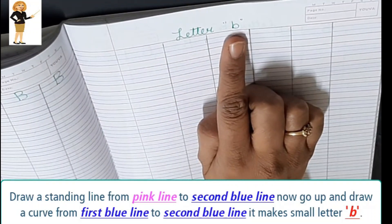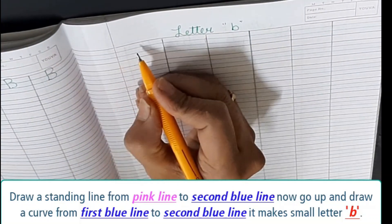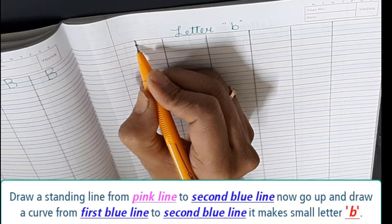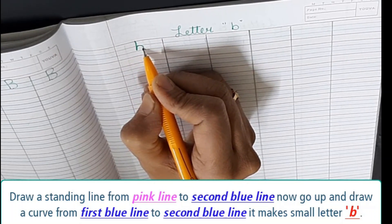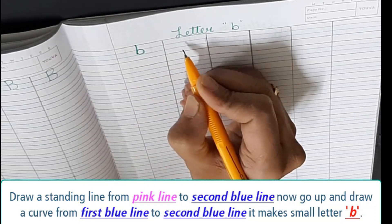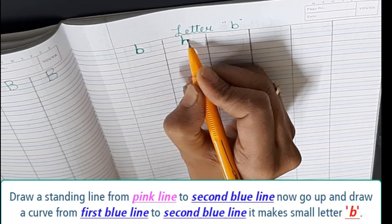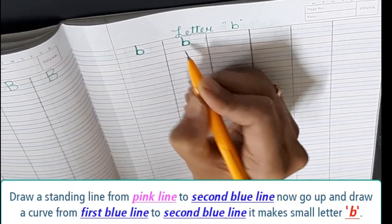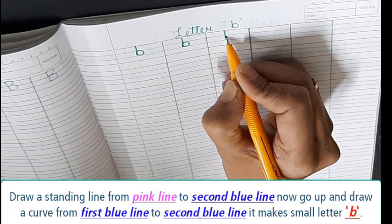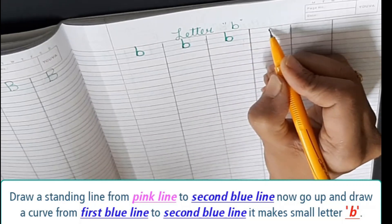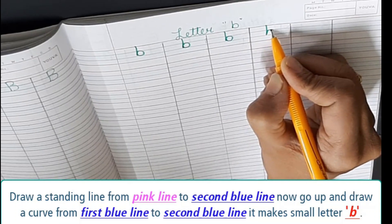Now we will learn how to write small letter b. Draw a standing line from pink line to second blue line. Now go up and draw a curve from first blue line to second blue line. It makes small letter b.